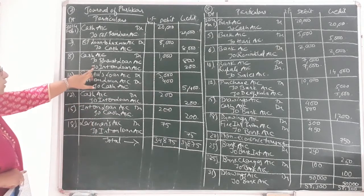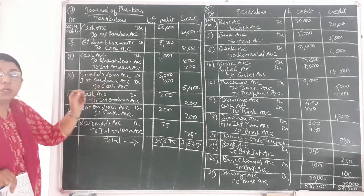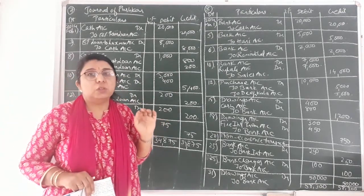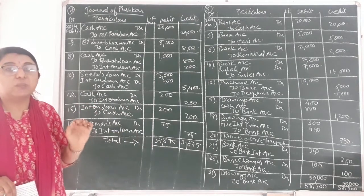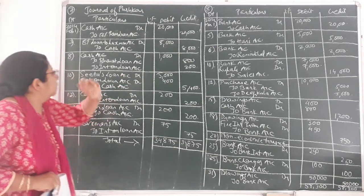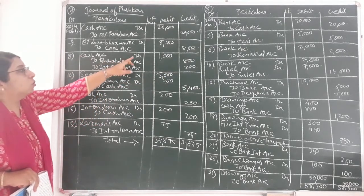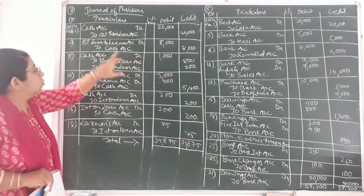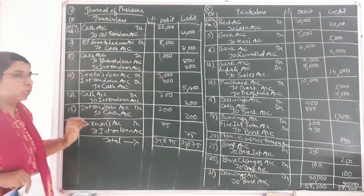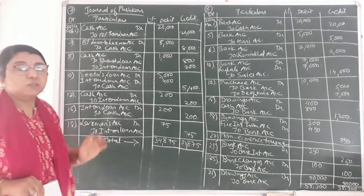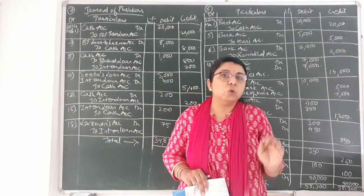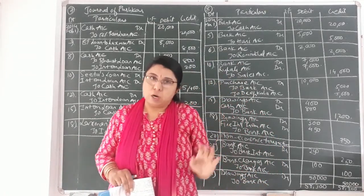Interest on loan here is an income. As per the rule of nominal account, credit all incomes and gains. So interest on loan has been credited. Cash account debit because debit what comes in — 800 plus 200 total is 1,000. All journal entries are based on the rules of debit and credit, which I have already explained in chapter number 2 for all three types of accounts.